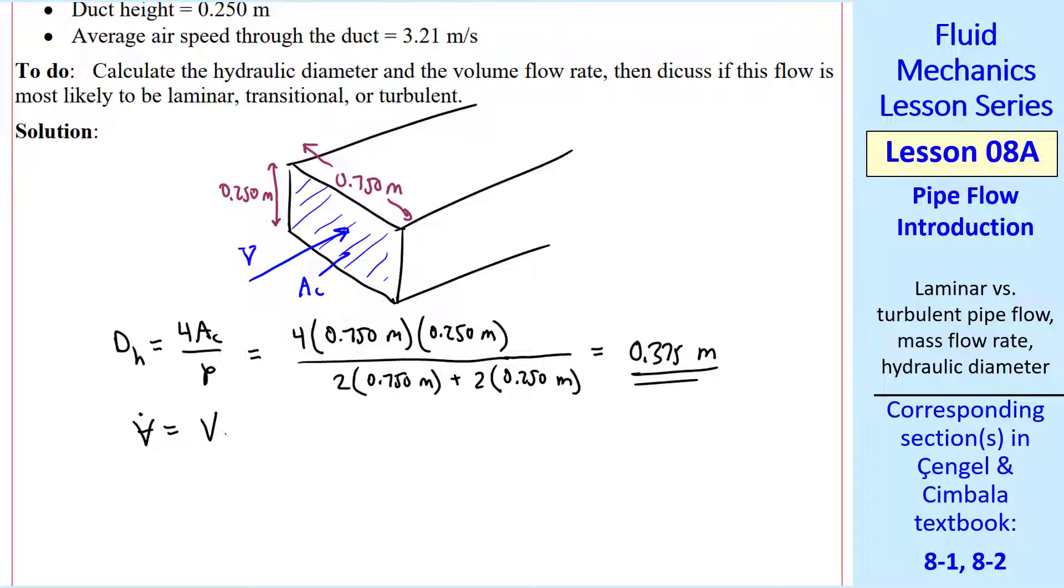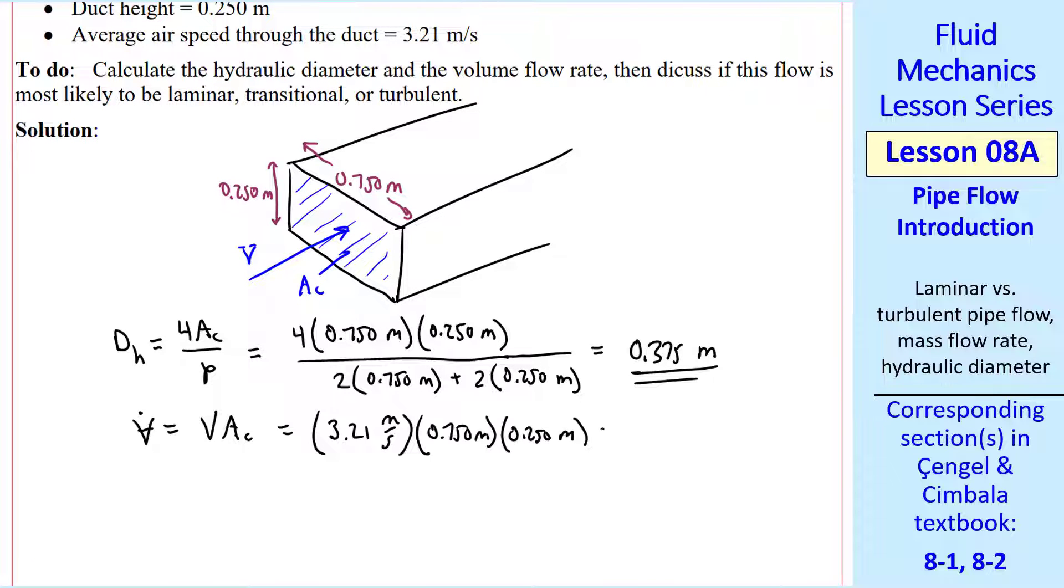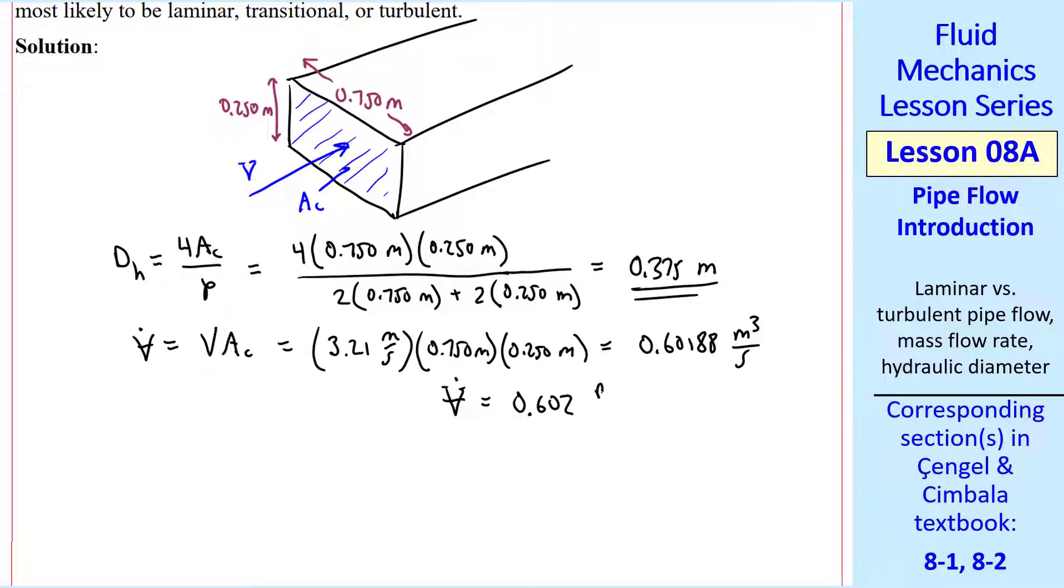The volume flow rate, remember, is V times the actual cross-sectional area, where this V is also the actual average speed, which was given up here. So we have V times AC, which gives us 0.60188 meter cube per second, which I round to 3 digits. So these are our final answers to 3 digits for DH and V dot.